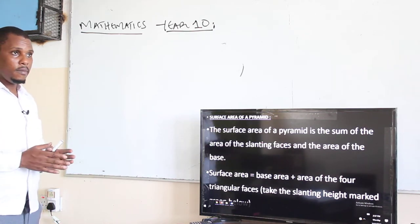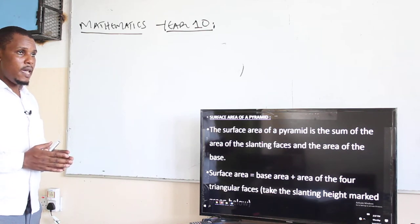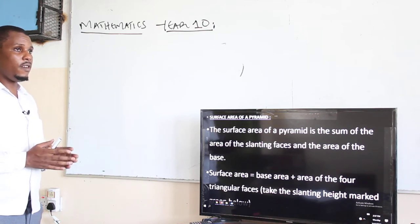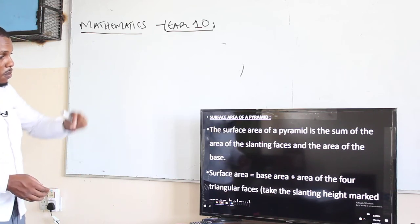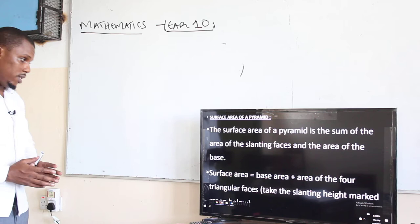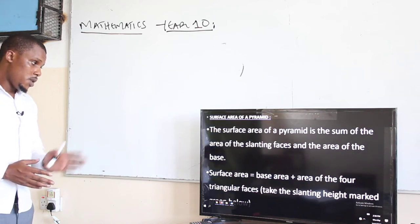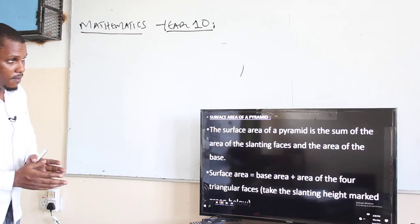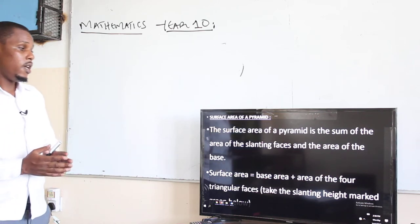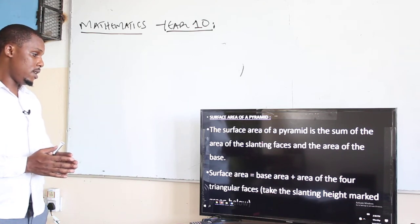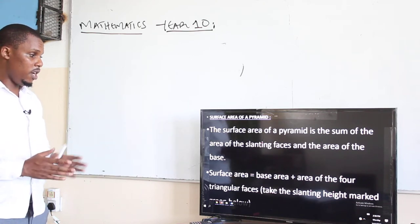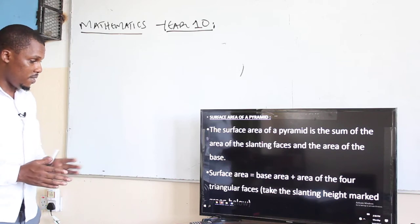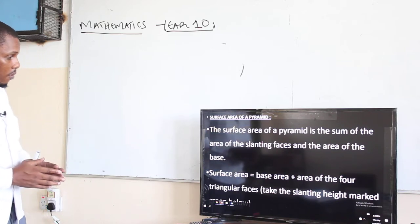A pyramid will have a point, with different slanting edges that are going to be meeting at a common apex. So in this case, you just find the area of the base, then you find the area of the slanting faces — which are mostly triangular — then you sum them to get the surface area of the pyramid.